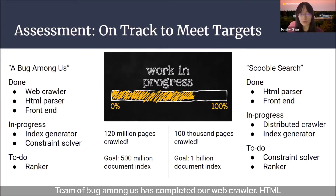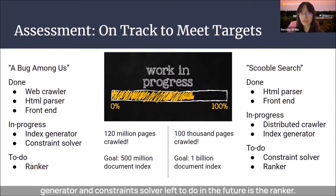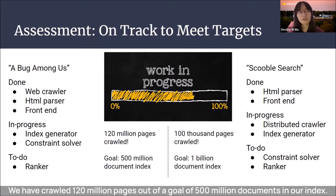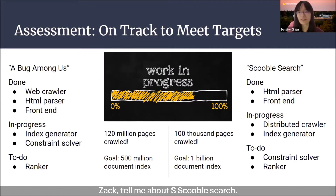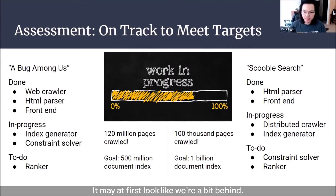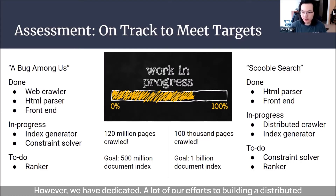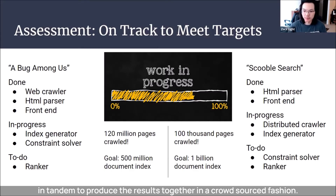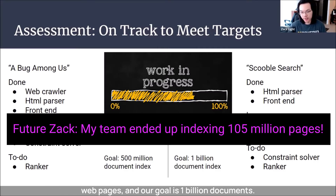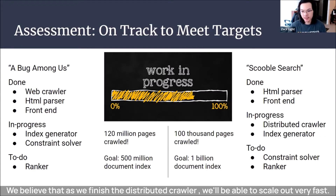Team A Bug Among Us has completed our web crawler, HTML parser, and front-end. Currently in progress are our index generator and constraint solver, and left to do is the ranker. We have crawled 120 million pages out of a goal of 500 million documents in our index. On our end, it may look like we're a bit behind; however, we have dedicated a lot of our efforts to building a distributed crawler — meaning the crawler runs on different machines working in tandem in a crowd-sourced fashion. Currently we have about 100,000 web pages and our goal is 1 billion documents. As we finish the distributed crawler, we believe we will be able to scale up very fast.